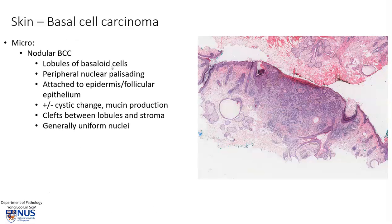Microscopically, nodular basal cell carcinoma, which is the example that we just saw, is composed of these islands or lobules of basaloid cells with peripheral nuclear palisading. It is attached to the overlying epidermis or the epithelium of the hair follicles.